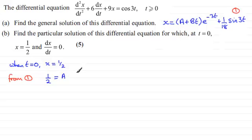So if I put that back into one, what we've therefore got is that x equals, for a, we've got a half then, plus the bt. And all of this is multiplied by e to the power minus 3t, and then plus 1/18th sine of 3t.